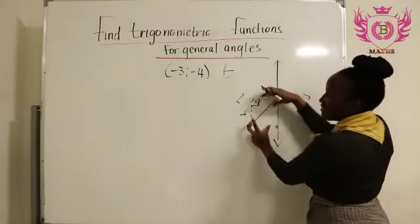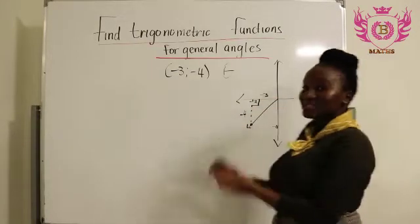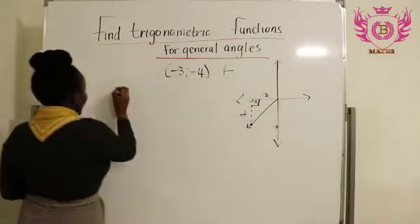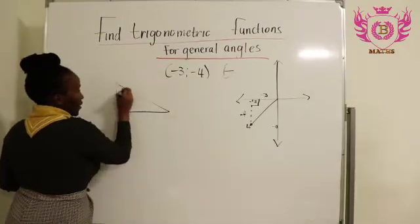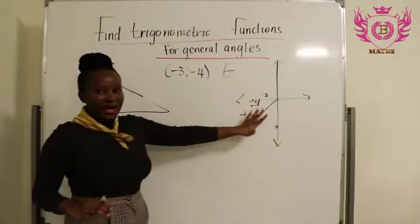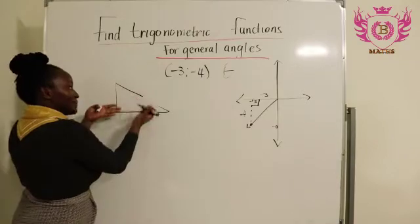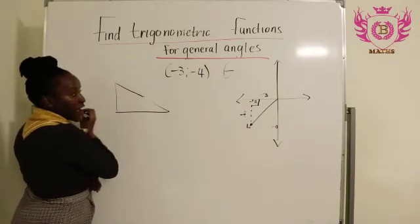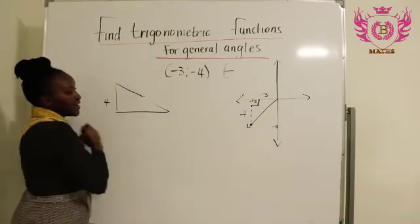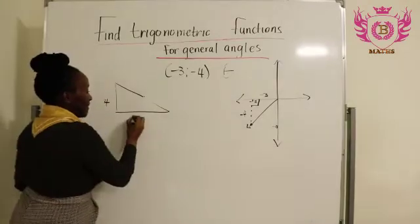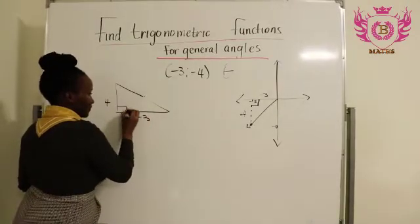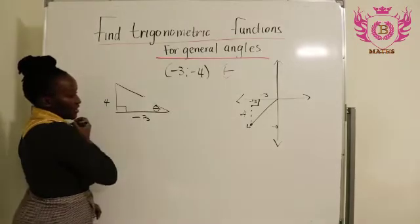So I like to take out this triangle so that I can see all the sides. The triangle will look something like this. So it's like I've taken this triangle and I'm flipping it upside. My y value is -4. My x value is -3. Okay so I'll put my angle theta over here.